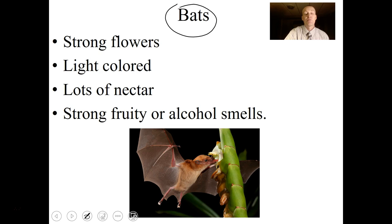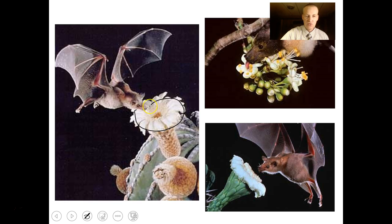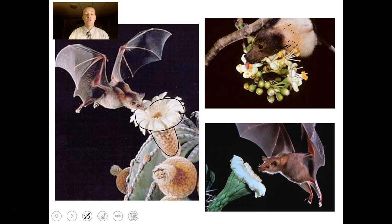Bat-pollinated flowers have a pretty cool pattern. They have strong light-colored flowers because bats come out at night, tons of nectar, landing pads, and very strong alcohol or fruity smells. Bats fly around at night using their sense of smell to track down these flowers. When they land on them — which are very strong flowers — they get pollen all over their chest, spreading it from one flower to the next. We don't see many bat-pollinated flowers here, but there are many in the deserts.